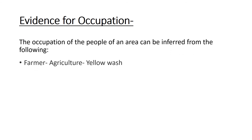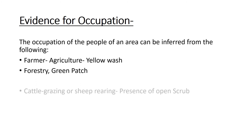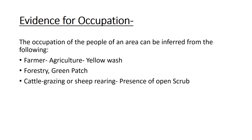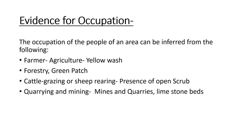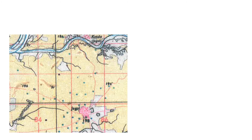We have learned about different types of occupation and how to answer those questions. Quick revision: if you see yellow wash, say farmer; green patches, say forestry; open scrub, say cattle grazing; mines, quarries, or limestone beds, say quarrying or mining; dense settlement connected by roads and railways, say trade. Be careful to write your answer in proper points — first identify something, then give an explanation for your understanding.